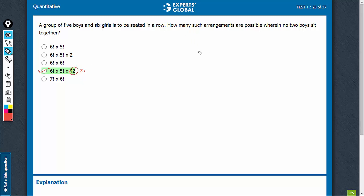Now, how to solve this one? In such questions, always first arrange the elements that do not have a restriction on them. In this question, the restriction is on boys - no two boys sit together. There is no restriction on girls.